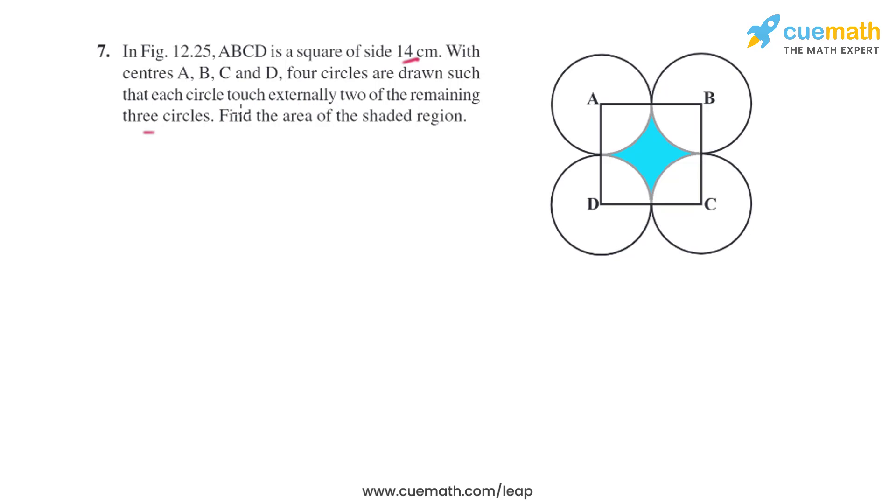Find the area of the shaded region. To find the shaded area, we need to find the area of the square and these four quadrants, then subtract the area of the quadrants from the area of the square to get the shaded region.